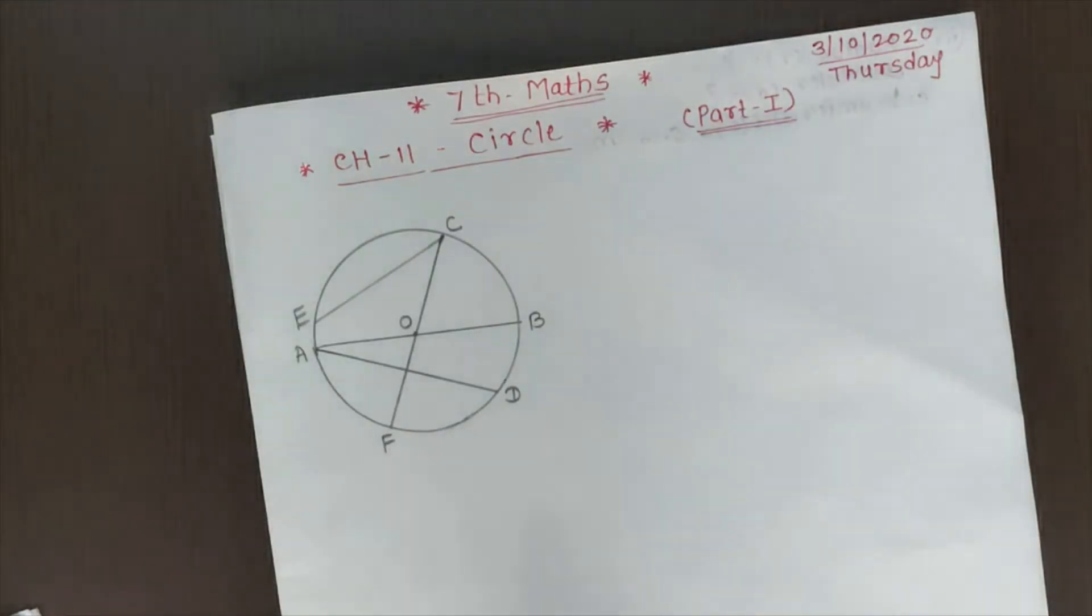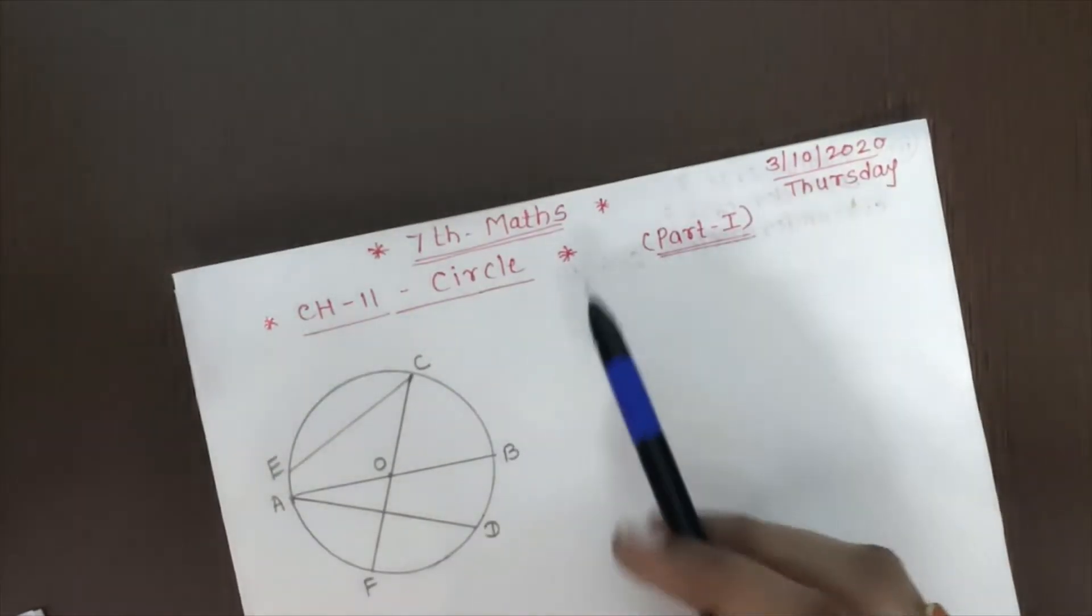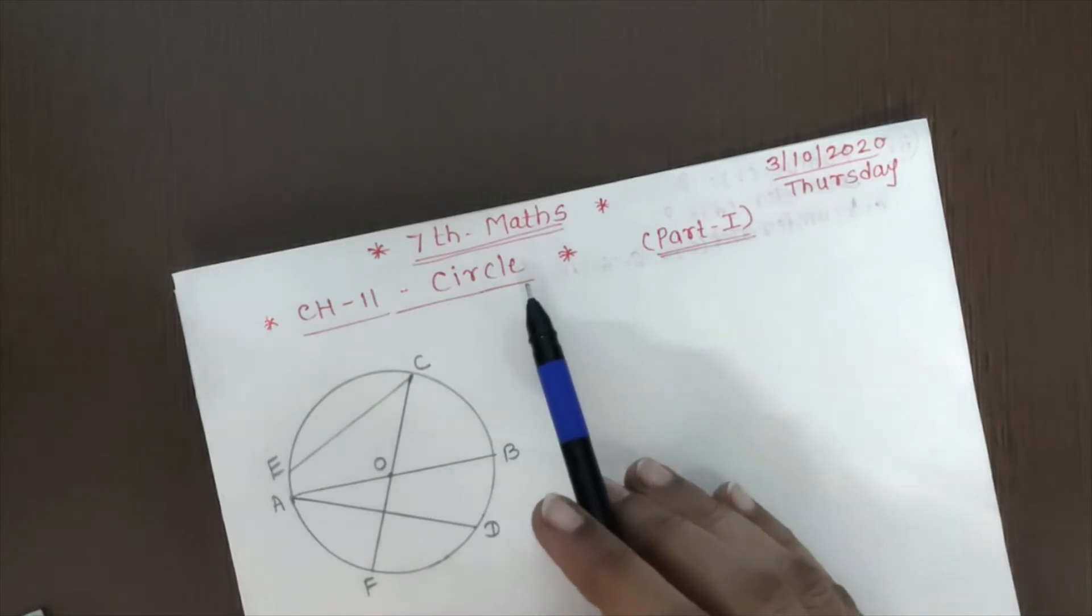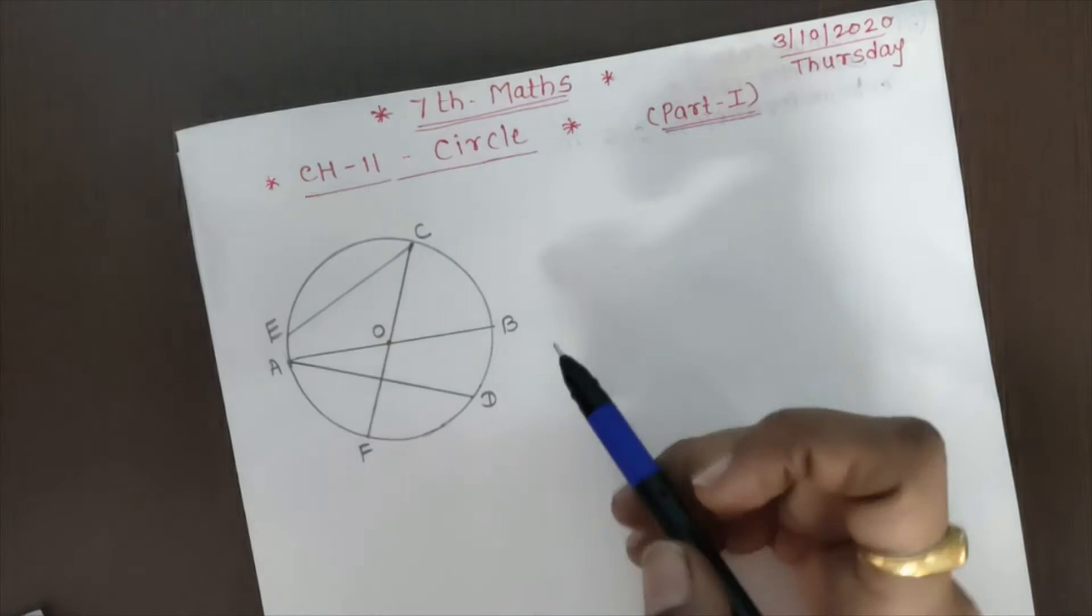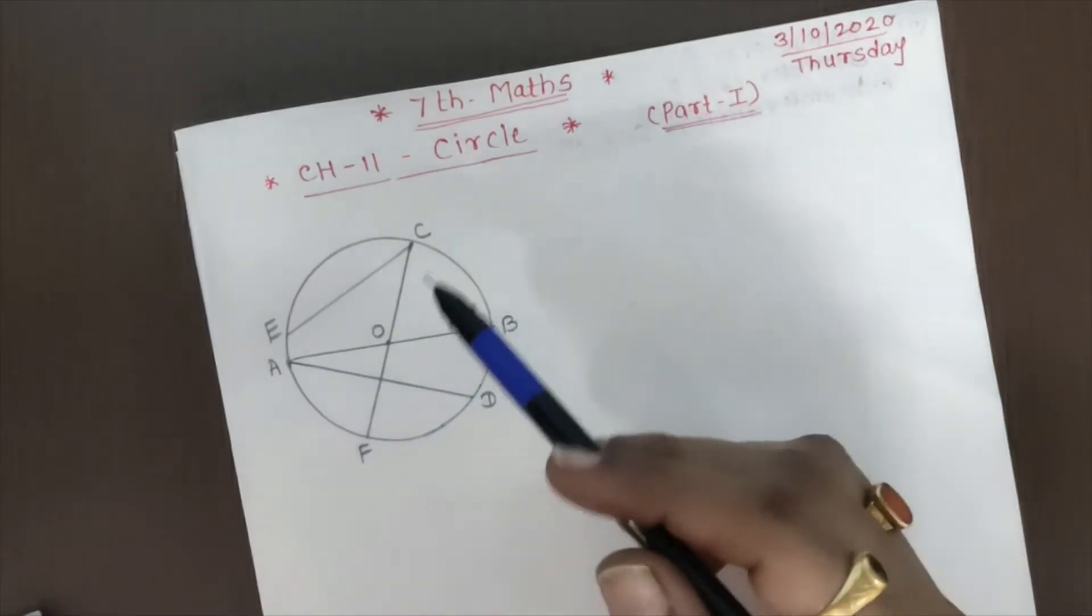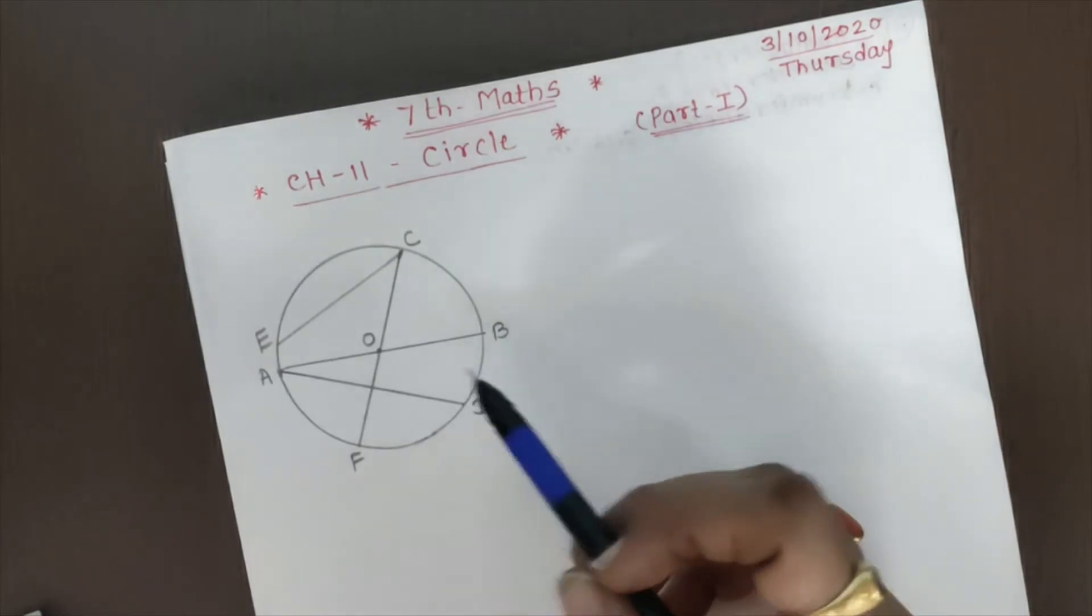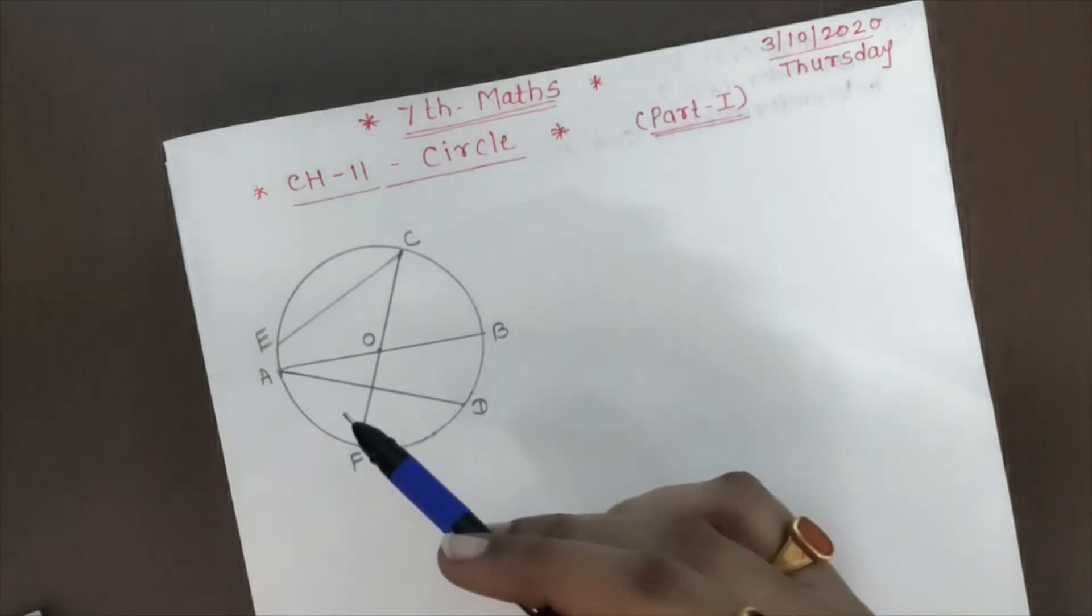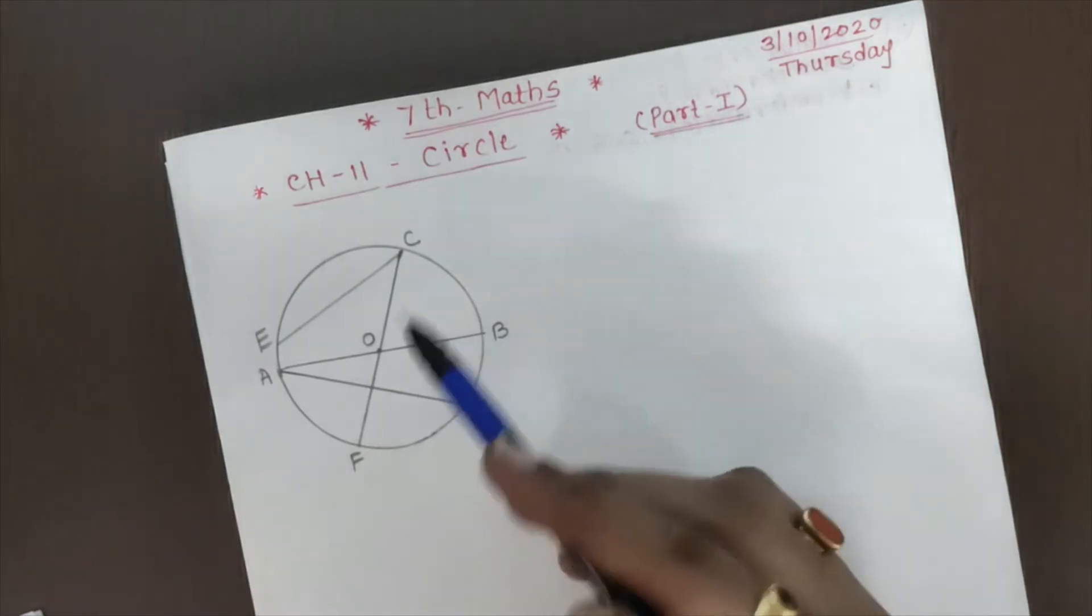Hello students, today we are going to start your next chapter of maths, that is chapter number 11, circle. Now see, this is the figure of circle over here. So I am going to take just a revision of you, because all this part you have studied in the previous standard. In 6th standard you have studied about this.